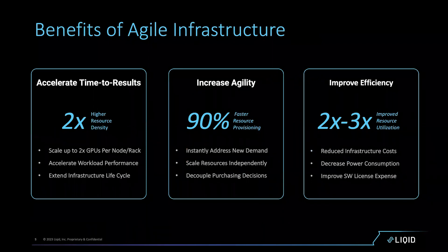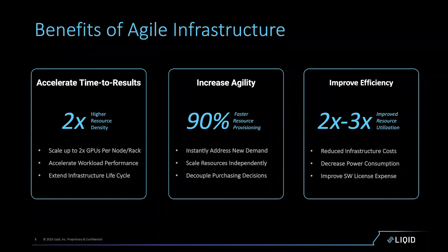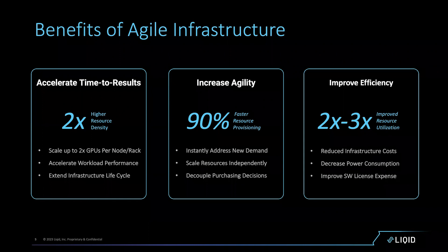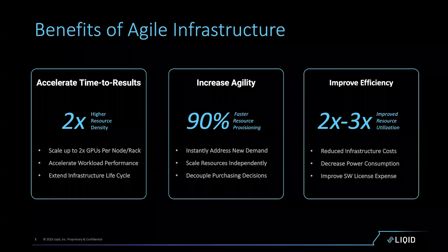When we take this approach of agile infrastructure, there are many benefits inside the data center. Today, our primary use case is around accelerators, GPUs, and AI-centric workloads. With a disaggregated approach, we are able to achieve higher density — higher GPUs per node, higher GPUs per rack, more GPUs per application. We can increase GPU density and performance density, getting more GPUs into the environment and building bigger nodes that run faster.